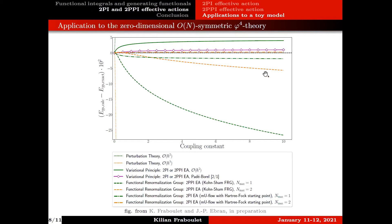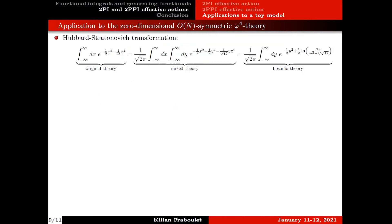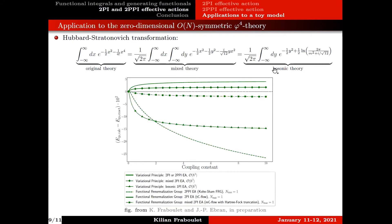So far we've discussed one way to introduce collective degrees of freedom — introducing a source coupled to composite operators leading to the 2PI and 2PPI effective actions. Another way is to use the so-called Hubbard-Stratonovich transformation. This is an exact transformation of functional integrals which can be formulated for standard Lebesgue integrals as well. Very often this approach enables us to significantly improve our results.